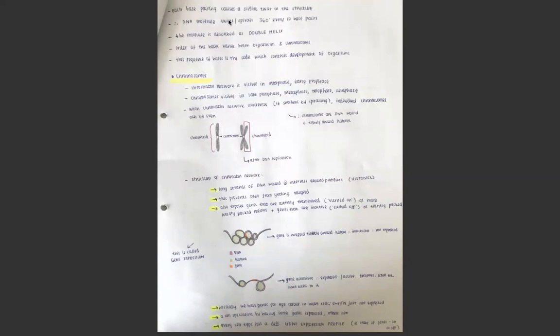Each base pairing causes a slight twist in the structure. That's why DNA is a double helix structure, where each base pairing twists about 36 degrees, causing them to twist a full 360 degrees every 10 base pairs. That's where we get that double helix structure from. Obviously, the order of the bases has to vary because that's what causes our unique physical structure and genetic structure. It varies between humans, within a species and between species. But all organisms will only have adenine, guanine, thymine, and cytosine.